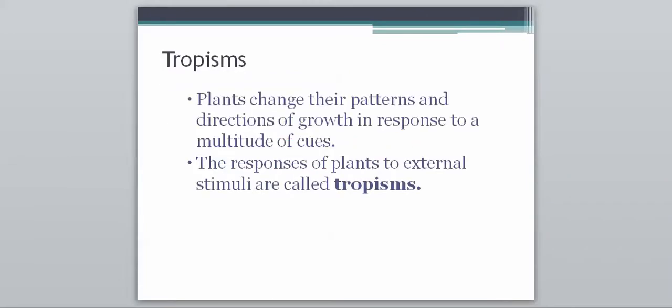So plants will change their patterns and directions of growth in response to a multitude of cues. So a cue is just a signal. They can respond to multiple cues or signals. And the responses of plants to external stimuli are called tropisms. So if you remember stimuli, plural form of stimulus there, is just things that affect the plant. Anything that can happen to the plant, like whether it gets too hot, whether it gets too cold, whether it gets too wet, whether it gets too dry. So a tropism is just going to be how plants respond to external stimuli.